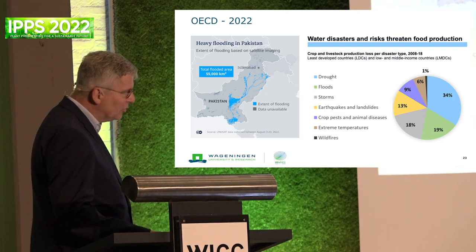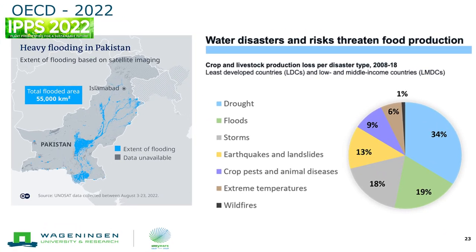I put in this slide to make sure we have both our feet on the ground. This is a 2022 report from the OECD about the disasters that threaten food production. Crop pests and animal diseases account for only 9% of this pie chart. The major threats are drought, floods, and storms.